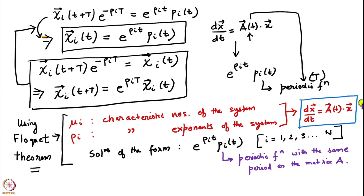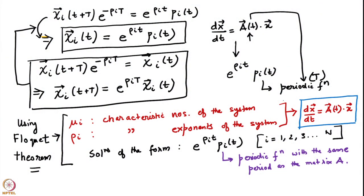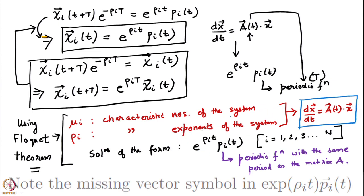We were looking at the Floquet theorem to analyze the solutions to the system dx/dt = A(t)x, where A is a time-periodic matrix of size n by n. Using the Floquet theorem, the general solution can be written in the form e^(ρᵢt) · pᵢ(t), where ρᵢ is defined using the characteristic numbers μᵢ of the system, which are related to the eigenvalues of the matrix C.